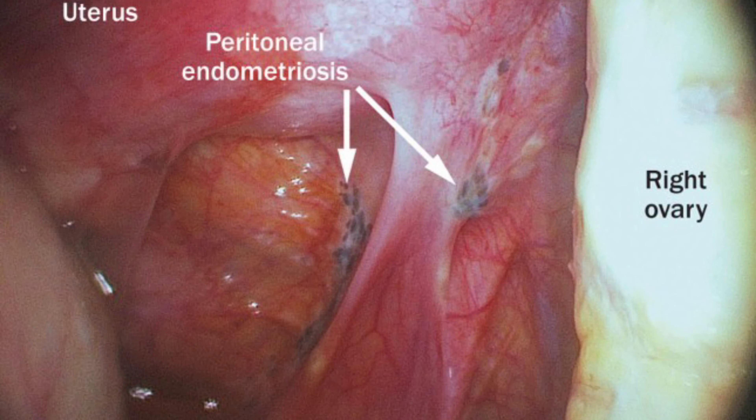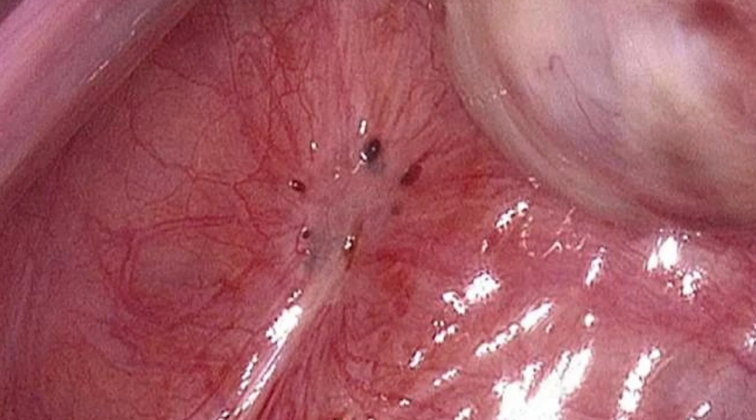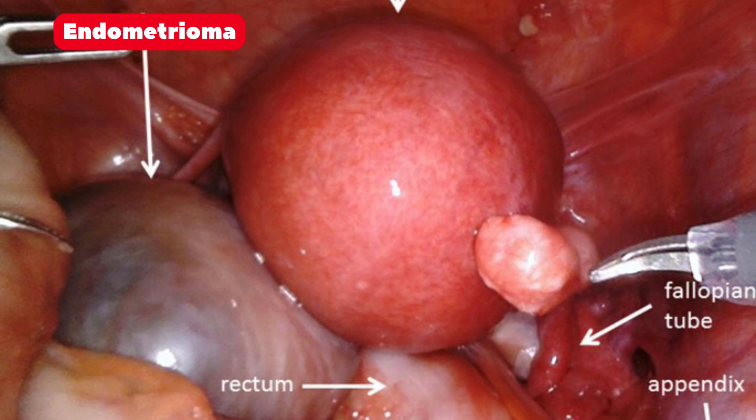If you go the endoscopic confirmation route, you'll be looking at pictures like these — small discolorations found on the uterus, uterine tubes, ovaries, and throughout the peritoneum and the abdominal and pelvic cavities. They can be very small, or they can be cystic — an actual bulge.